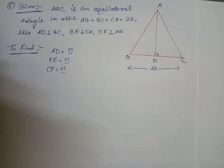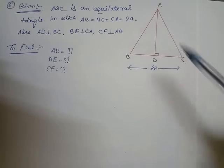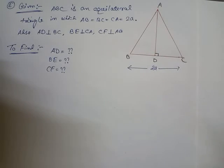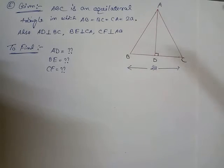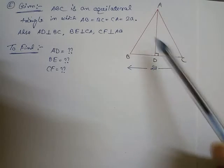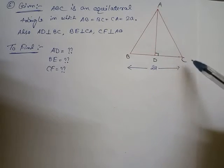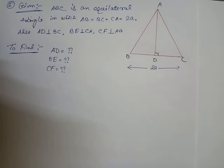From the main book, the given portion states: ABC is an equilateral triangle in which AB = BC = CA = 2a. Also given: AD is perpendicular to BC, BE is perpendicular to CA, and CF is perpendicular to AB. However, I have not drawn BE and CF here — the reason is that since it is an equilateral triangle, we only need to find one altitude.